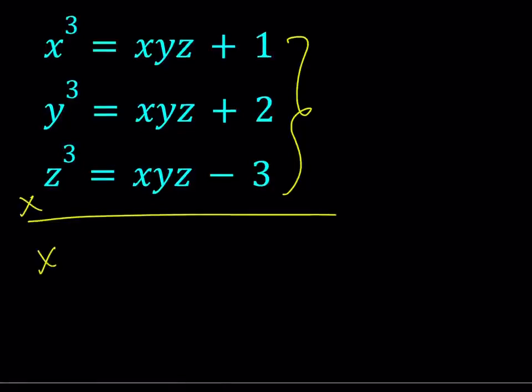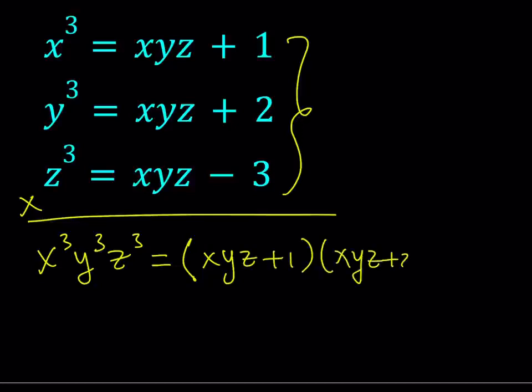We get x cubed, y cubed, z cubed. On the right-hand side, we get xyz plus 1, xyz plus 2, and xyz minus 3.